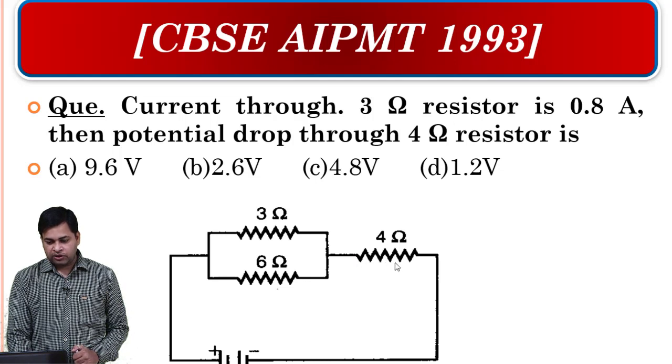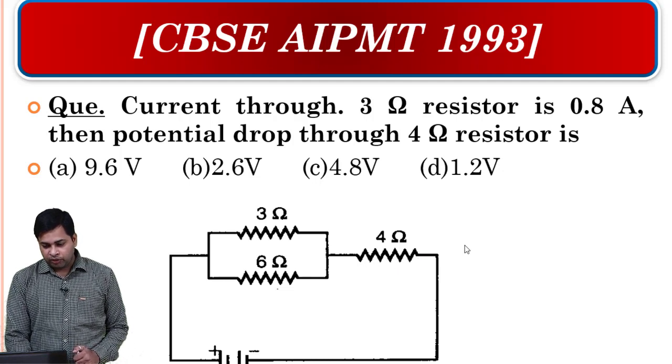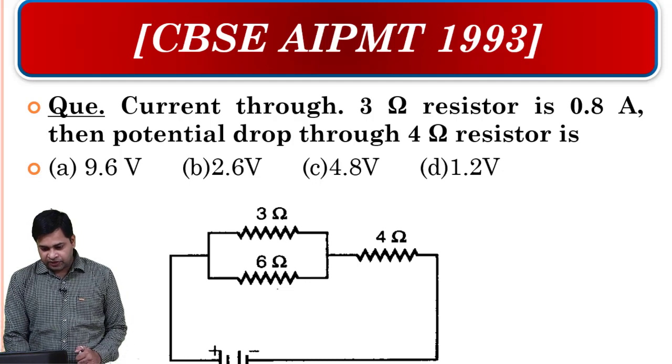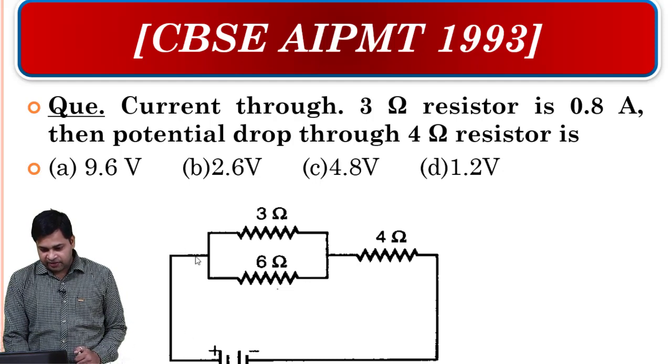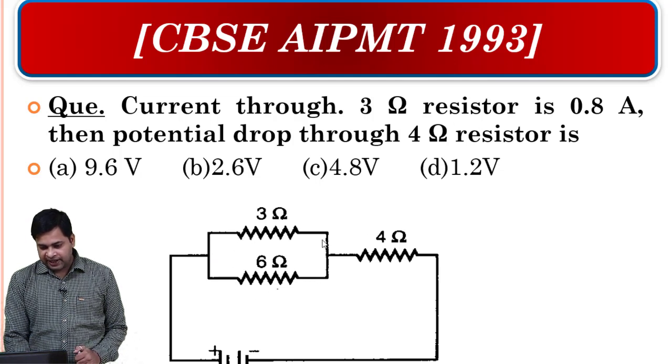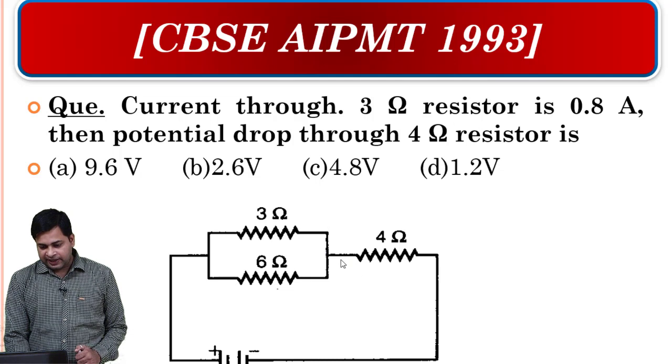So one thing is clear - to find potential difference, we first need to find the current passing through it. Look, current will come out from the positive terminal of the battery, will go here, then center, will go through 2-ohm and 6-ohm, then however much goes will come back.